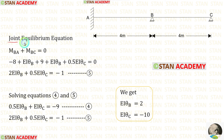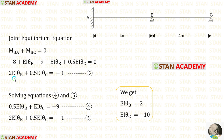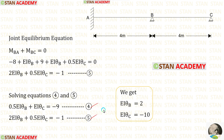Now let us make the joint equilibrium equation. At joint B: M_BA + M_BC = 0. Substituting the slope deflection expressions for M_BA and M_BC and adding, we get the combined equation, keeping numerical values on the right side. Using a calculator, we solve equations 4 and 5 to get the values of EI·θ_B and EI·θ_C. If you don't know how to solve two equations with a calculator, see the link in the description below.